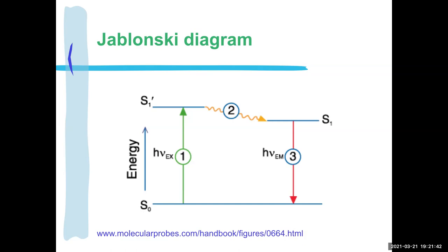You cannot have red excite green. You can have green excite red because green is higher energy and red is lower energy. Remember: higher energy is also a shorter wavelength because it's higher frequency. Lower energy is a longer wavelength and less frequent. Long wavelength and less frequent are the same thing basically.